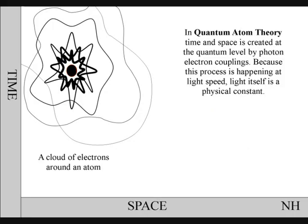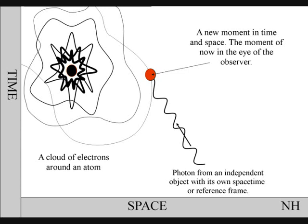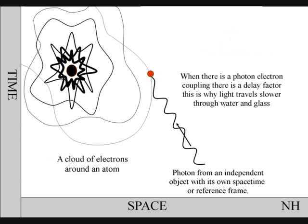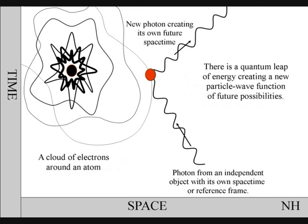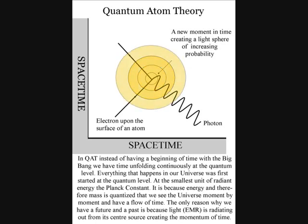In this diagram of an atom, a photon expands through space as a wave-particle function of light. When it makes contact with the electrons on the surface of the atom, the wave function will collapse into a new photon particle and into a new moment in time and space. When there is a photon-electron coupling, there is a delay factor. This is why light travels slower through glass and water. There will be a quantum leap of energy, creating a wave-particle function of future possibilities. In this way, two-dimensional space on the surface of the atom expands into three-dimensional space-time of the observer.